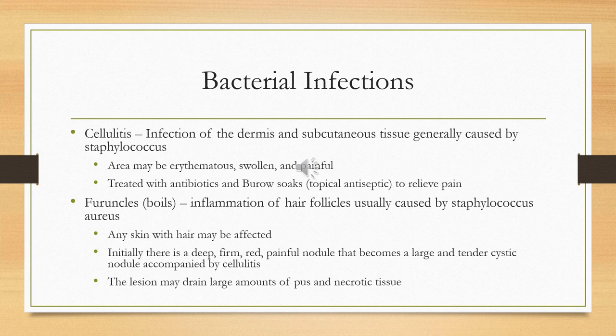Treatment includes IV or oral antibiotics depending on the severity. They might also use Burow's soaks, a topical antiseptic to help with pain. If gangrene occurs, the patient would likely need surgical debridement, or incision and drainage of the surrounding tissue.